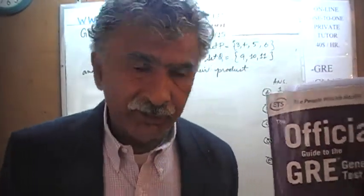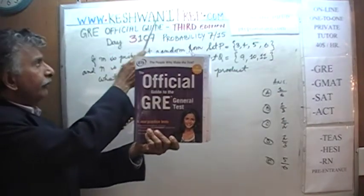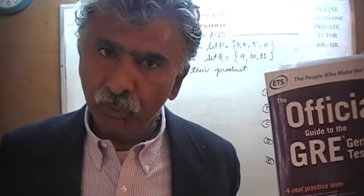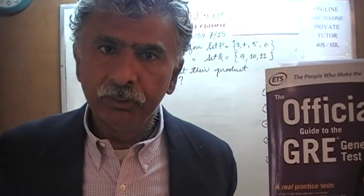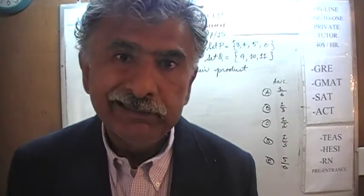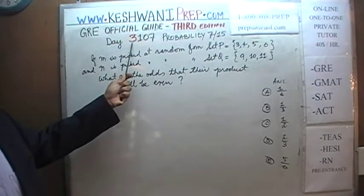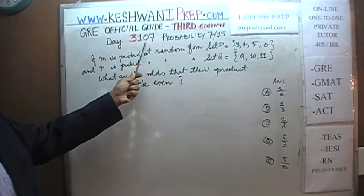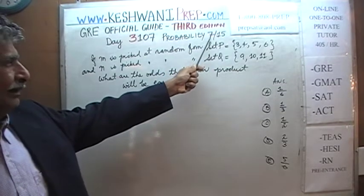Hello, my name is Keshwani, S-K-E-S-H-W-A-N-I. We are here because we want to prepare for the GRE. We have been solving math problems out of this book, the official guide to the GRE, the third edition. If you do not own this book already, purchase one immediately — you are going to need it. Today is our lesson number 107, Day 3107. The 3 signifies that we are in the third edition, day 107. We are working on probability problems. Today is the seventh video in a series of 15 videos.